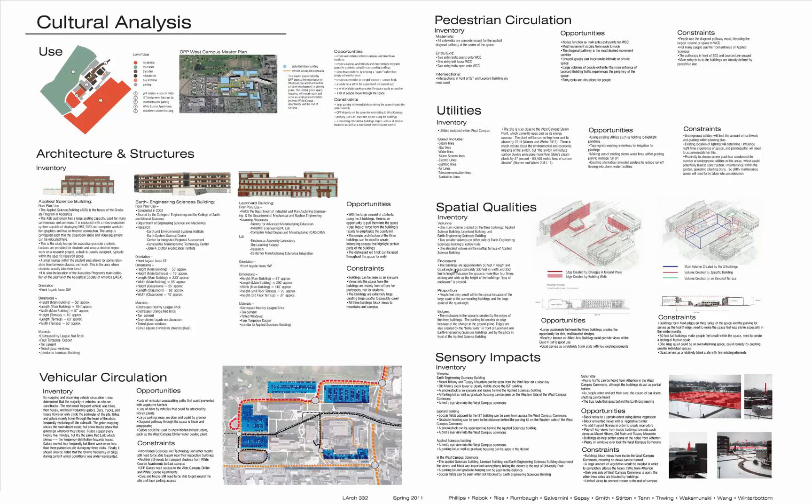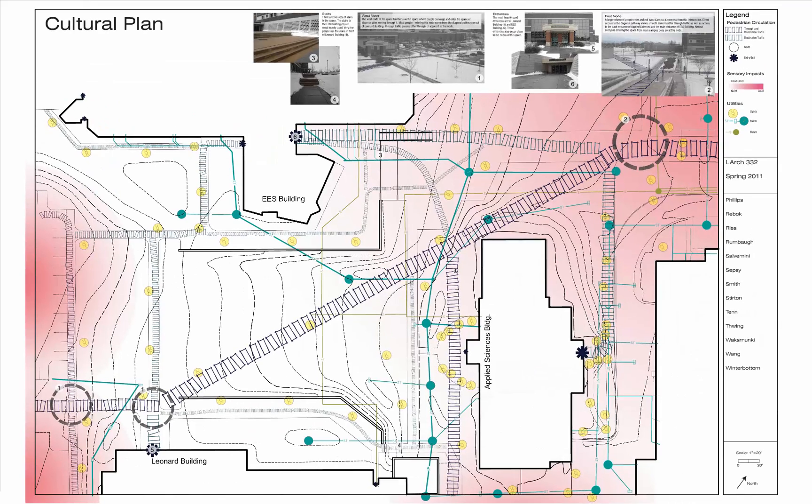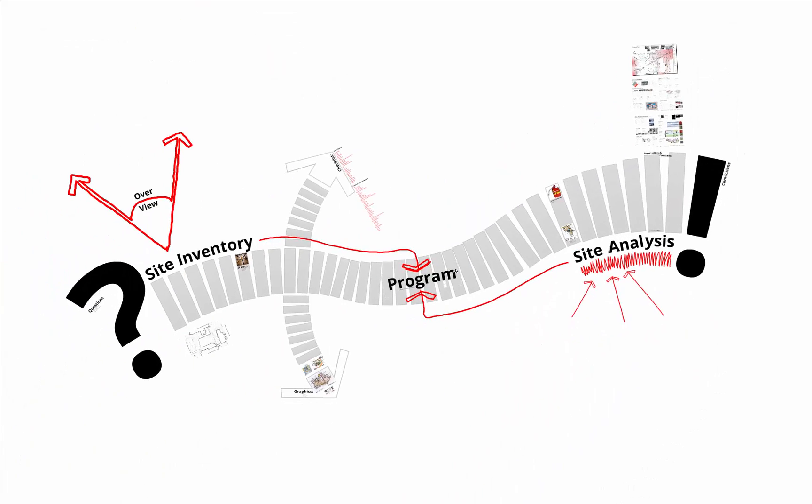I hope this was helpful. As I said, I'll put a link to this Prezi onto Angel so you can go back and look at it at your leisure. It's really not a super complex thing — it's just a matter of first finding out what's out there, documenting that, and secondly, based on the program requirements and your design intent, drawing some analysis conclusions that will help you come up with a list of opportunities and constraints that will guide you as you move through the design process.